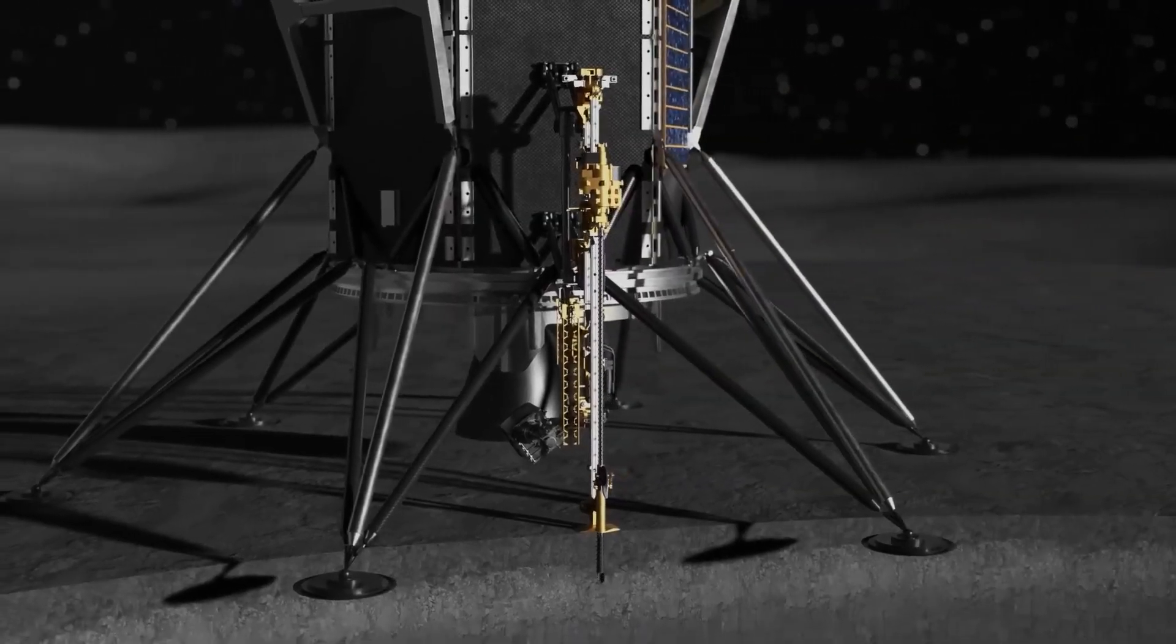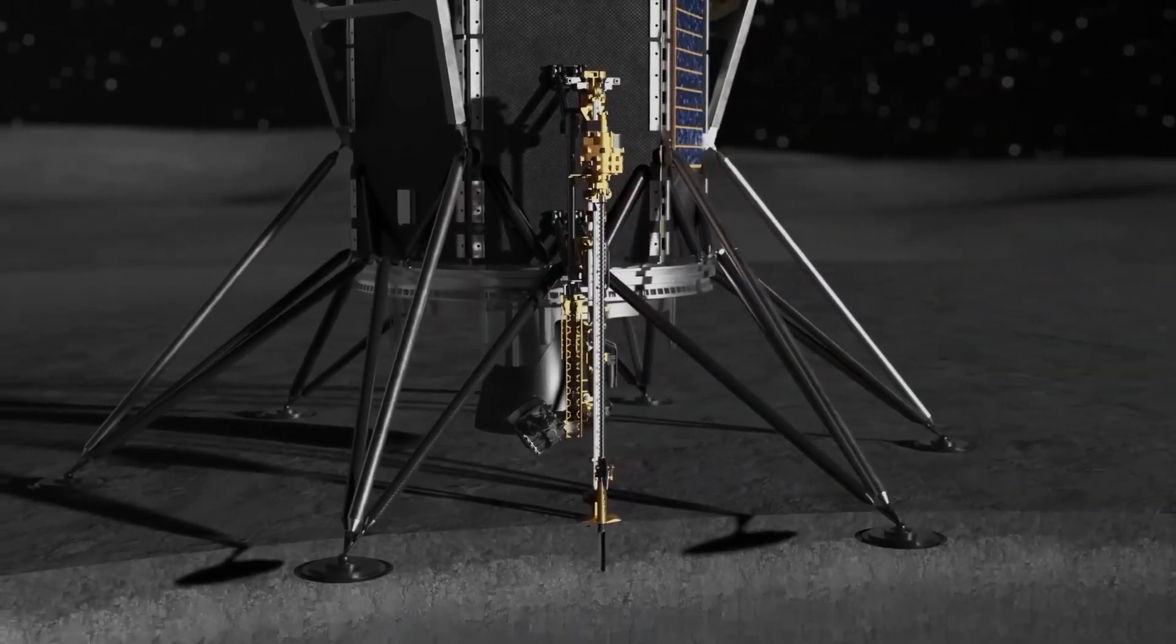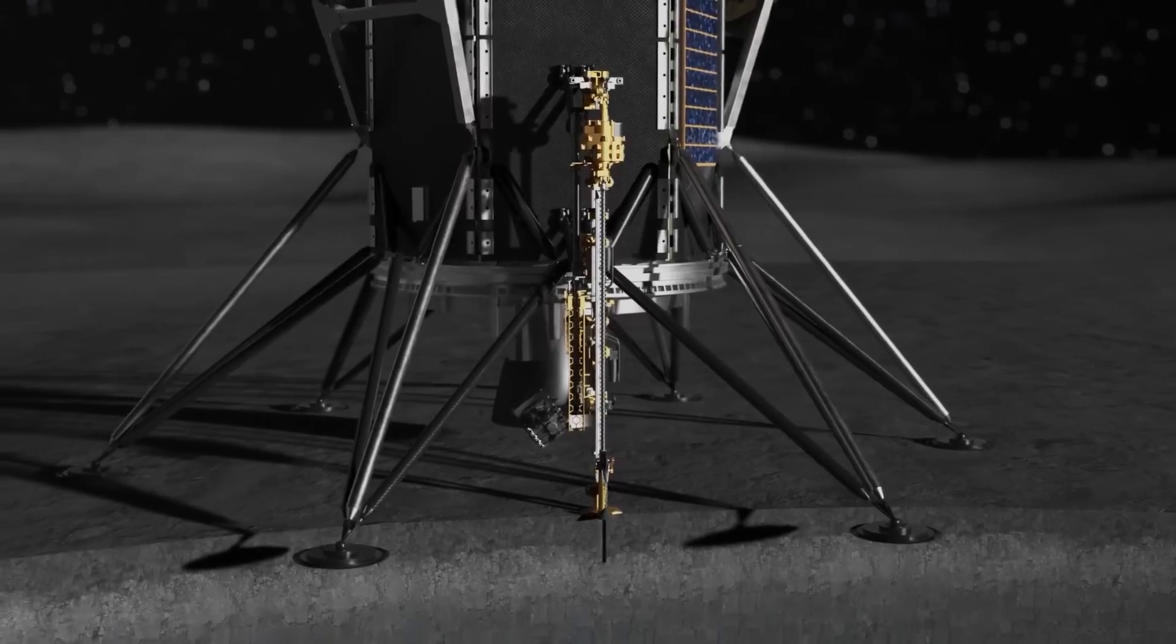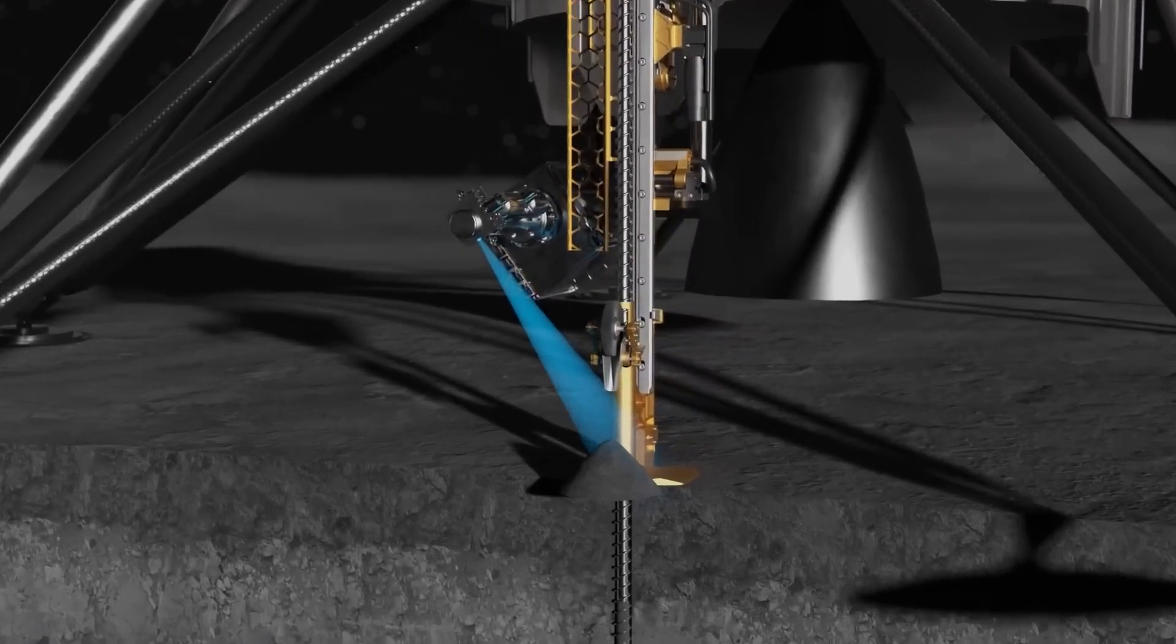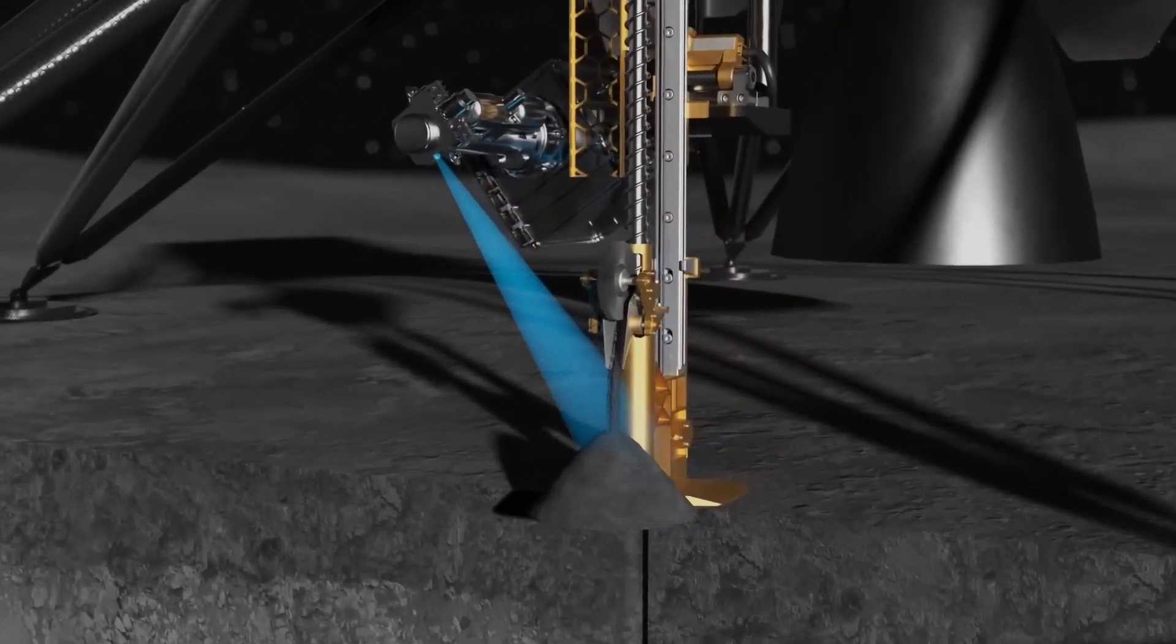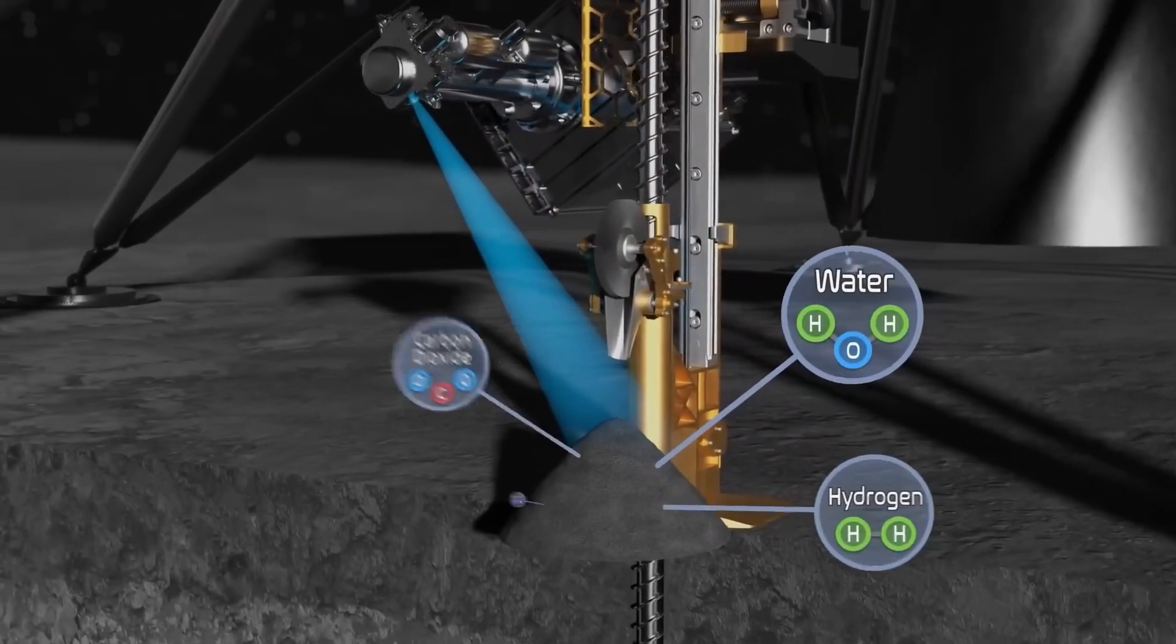Triton will drill into the lunar surface, taking one small bite deeper into the soil at a time and bringing that sample up and depositing it on the lunar surface. MSOLO will then evaluate those samples as they arrive on the surface to identify and measure the composition of water and other volatiles emanating from the samples.